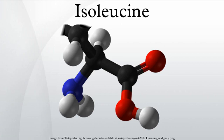Catabolism: Isoleucine is both a glucogenic and a ketogenic amino acid. After transamination with alpha-ketoglutarate, the carbon skeleton can be converted into either succinyl-CoA and fed into the TCA cycle for oxidation, or converted into oxaloacetate for gluconeogenesis.